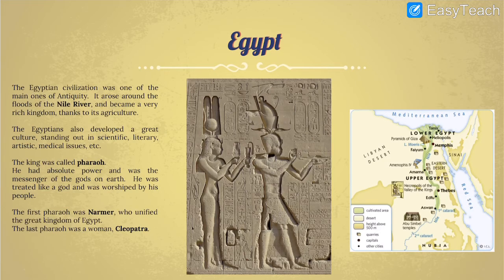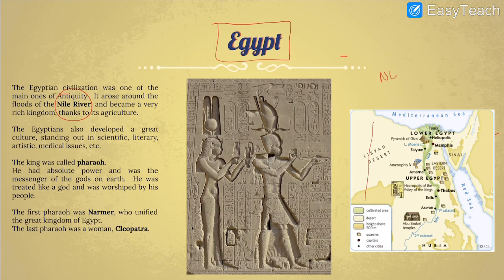Now we are going to start with the second civilization. This is also a fluvial civilization, so it began next to a big river — in this case, the Nile River. Egypt, as you already know, is a country situated in the northeast of Africa, particularly around the Nile River, next to the Mediterranean Sea in the north and the Red Sea in the east.